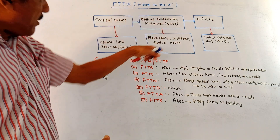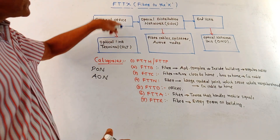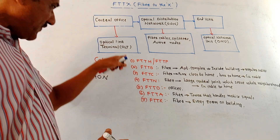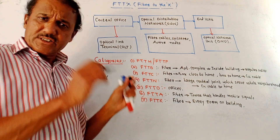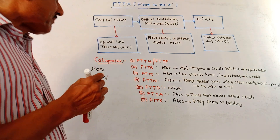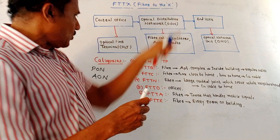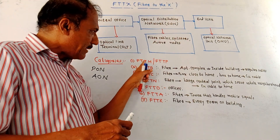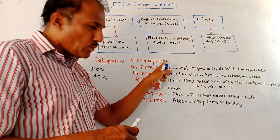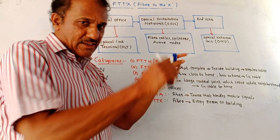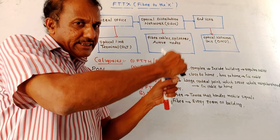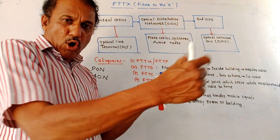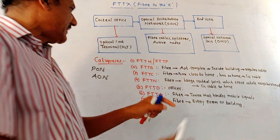That covers the generalized diagram and working of the FTTX network. Now for the different categories: X is the general notation. It can be FTTH — fiber to home — or FTTP — fiber to premises — where the fiber is directly connected to the home or premises of a building.